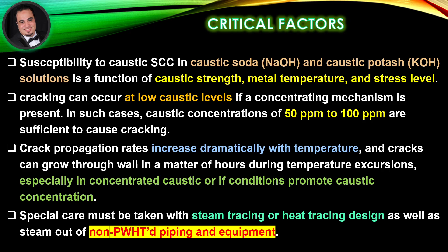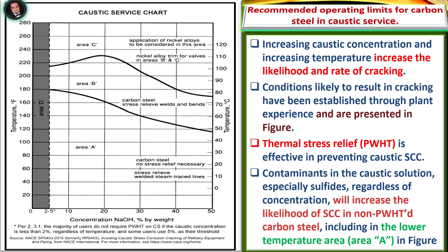Special care must be taken with steam tracing or heat tracing design, as well as steam out of non-post-weld heat treatment piping and equipment, as illustrated in figures. Recommended operating limits for carbon steel in caustic service show that increasing caustic concentration and increasing temperature increase the likelihood and rate of cracking.